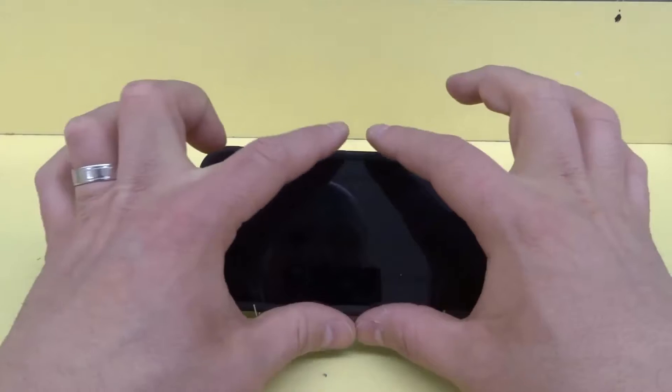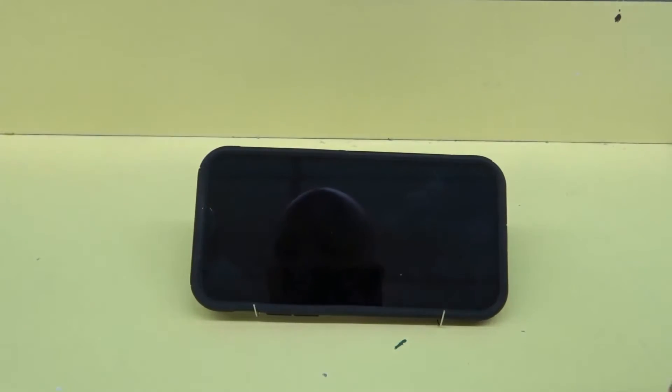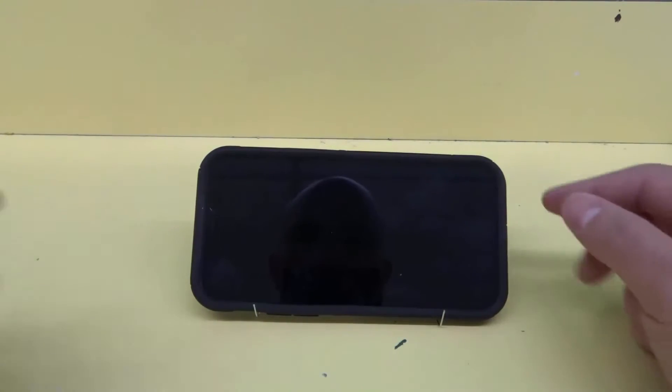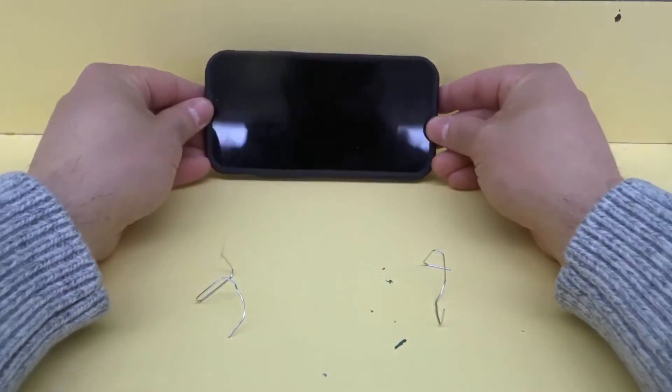As you can see right here, my phone is being held up by little paperclips. I'm going to remove the phone and show you what the paperclips look like.